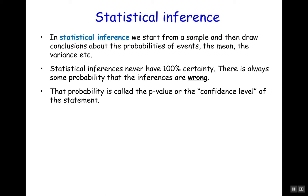That probability — the probability that the inference is wrong — is called the p-value or the confidence level of the statement. It basically represents the possibility that what we see is just generated by random noise.